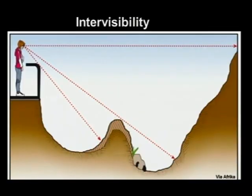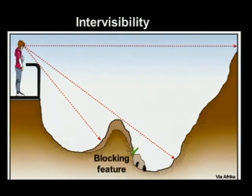Have a look at this person standing here. This person is standing here and is looking in that direction, and immediately you will see something happening here. This is a blocking feature — this feature here is blocking the line of vision of this person standing here.